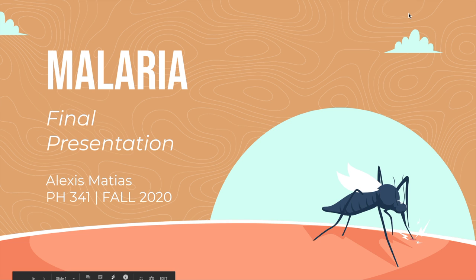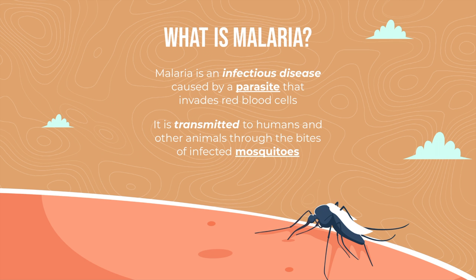Hello everyone, my name is Alexis Matias and my final presentation topic is malaria. Malaria is an infectious disease caused by a parasite that invades red blood cells. The parasite commonly infects a certain type of mosquito and is transmitted to humans and animals when they are bitten by one.